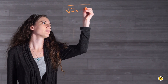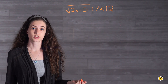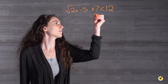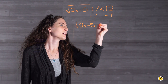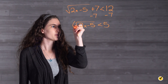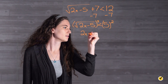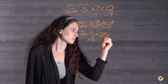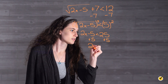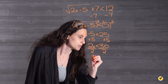Let's try another one. Solve for x: the square root of 2x minus 5 plus 7 is less than 12. We're going to start by subtracting 7 from both sides, so we have the square root of 2x minus 5 is less than 5. Then we're going to square both sides, which gives us 2x minus 5 is less than 25. Add 5 to both sides: 2x is less than 30. Divide by 2 on both sides: x is less than 15.